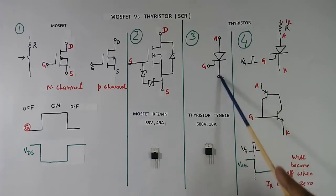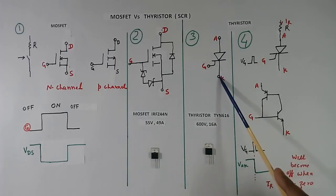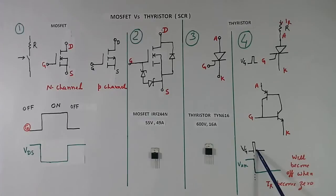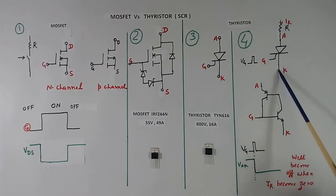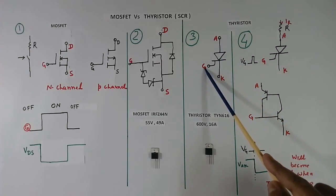To make it OFF, you have to make the current zero. Here I have shown: when we give a gate pulse, thyristor becomes ON. When we remove the gate pulse, it remains ON. And it will become OFF when the anode current becomes zero. So we cannot make thyristor OFF using gate pulse.